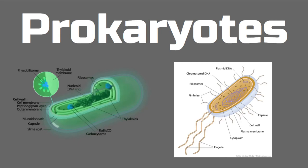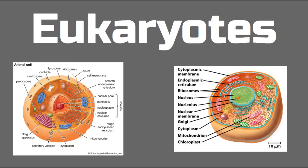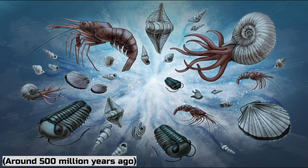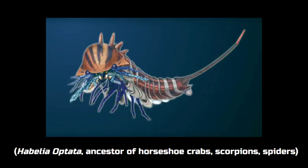Prokaryotes eventually evolved a nucleus and other organelles, and thus created eukaryotic cells. All living organisms, excluding forms of bacteria, are eukaryotic creatures. The Cambrian explosion occurred around 500 million years ago and marked a large diversification of life. Many ancestors of current-day species were formed in the Cambrian explosion. Evolution speeds up after the explosion, as the idea of predator and prey became a reality.